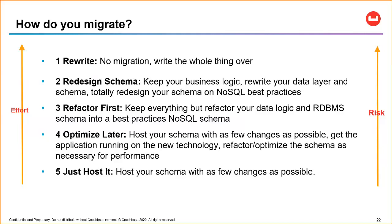Does Couchbase support joins between two different JSON document collections? Yes — I've already shown an inner join, and you can do a left join, joins on multiple fields, and so on. You can join between collections, between buckets, between scopes — any combination, assuming your user has the appropriate permissions.